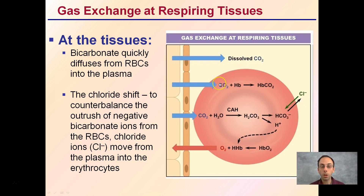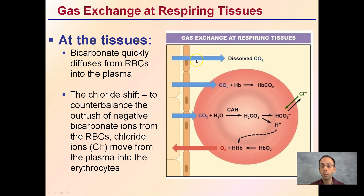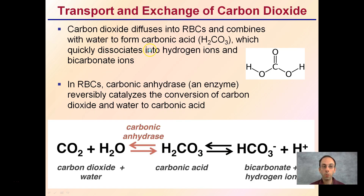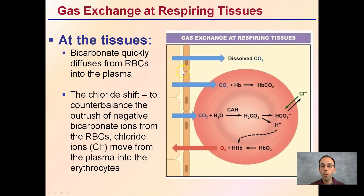Looking at this at a pictorial level: at the tissue level, bicarbonate quickly diffuses from red blood cells into the plasma. The chloride shift counterbalances the outrush of negative bicarbonate ions — chloride ions (Cl-) move from the plasma into the erythrocytes. We have oxygen moving into respiring cells, and carbon dioxide leaving in three different forms: combining with hemoglobin, combining with water to form carbonate ions, or simply dissolving into the blood plasma. This shows the three forms — dissolved, chemically bound, and bicarbonate ion.